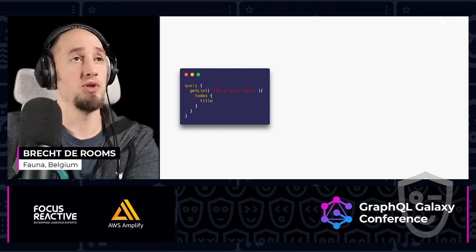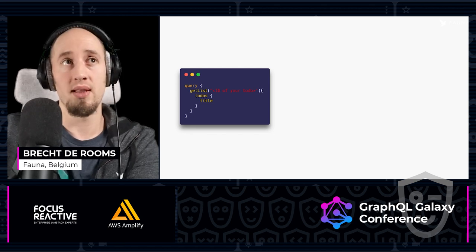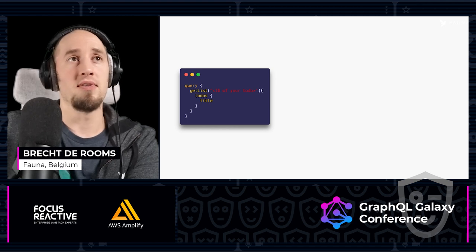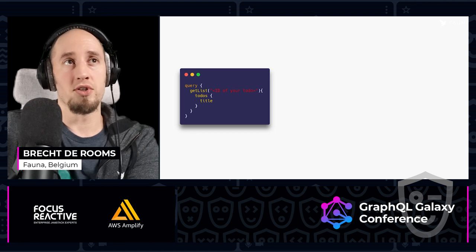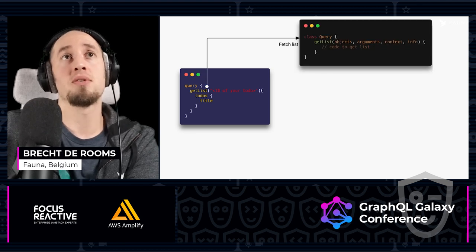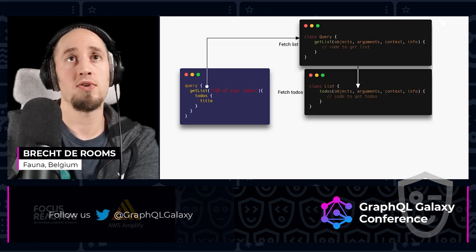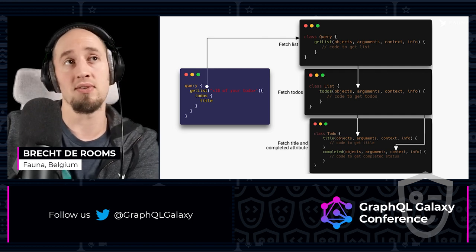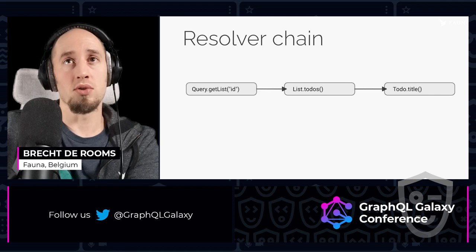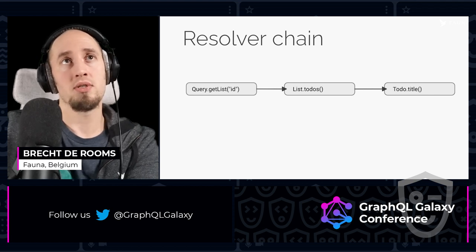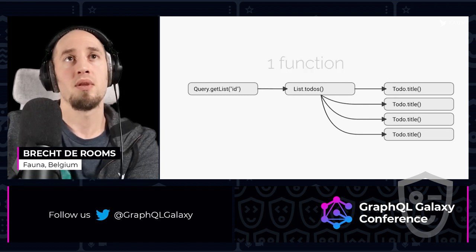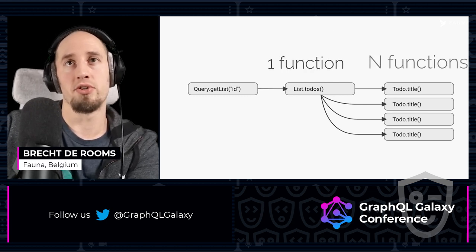How do GraphQL resolvers work? Well, typically if you have a query like this with getList, todo, title — every field in here like getList and todos and title are fields, and they'll map on a function. So getList will be a function, and that will delegate to the todos function, that will delegate again to the title function, for example to the title attribute. This is a resolver chain, which is a chain of functions, but it's actually more of a resolver tree of function calls, because here there's one function that calls n functions.